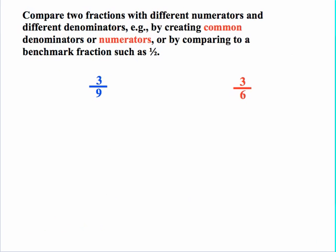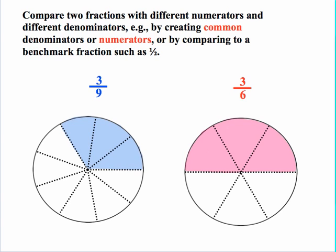Let's look at the strategy of comparing common numerators. Here the numerators are already the same — we're comparing three-ninths and three-sixths. Students have to realize that with three over six we have six pieces, as opposed to nine pieces for three over nine, so those pieces must be smaller. We have three pieces in each case, but the ones with six parts are bigger, so three over six is bigger than three over nine. Using the benchmark strategy would probably be easier here, since three-sixths is one-half and three-ninths is a fraction smaller than one-half.